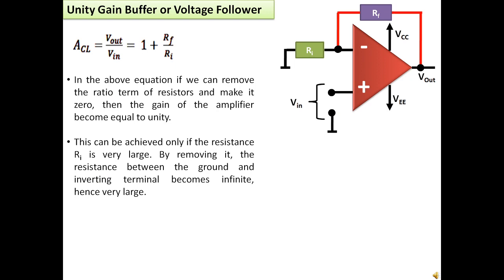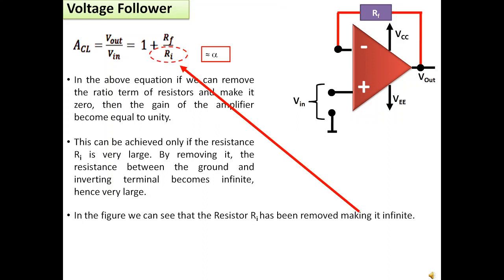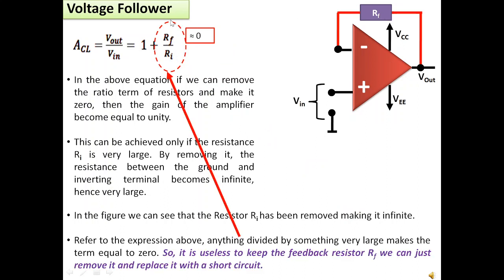This can be achieved only if the resistance Ri is very large. By removing it, the resistance between the ground and the inverting terminal becomes infinity. In the figure here we can see that the resistor Ri has been removed, making it infinite. Anything divided by something very large makes the term equal to 0. So it is useless to keep the feedback resistor Rf and we can just remove it and replace it with a short circuit.